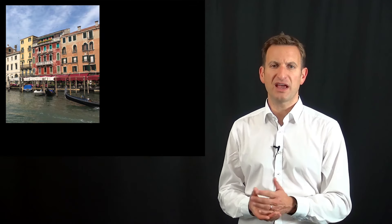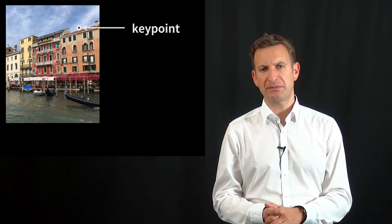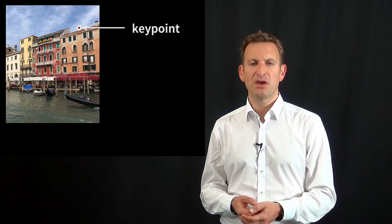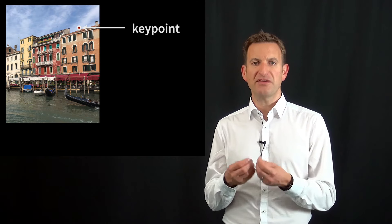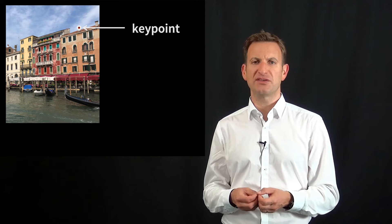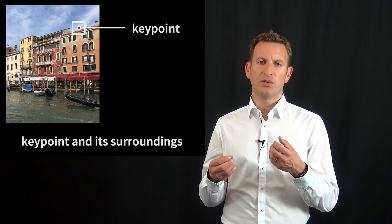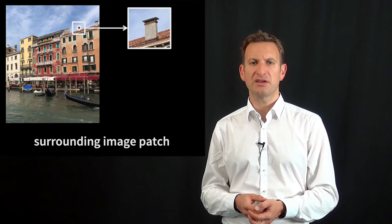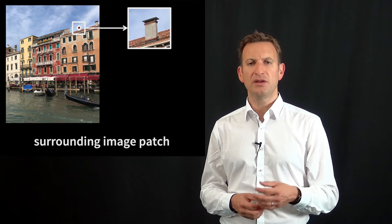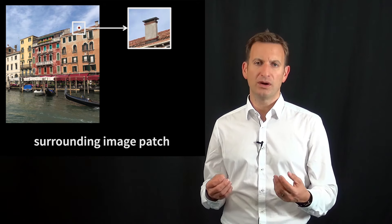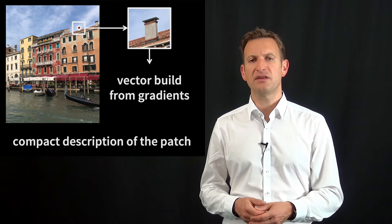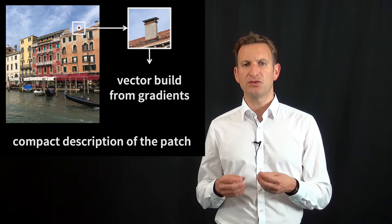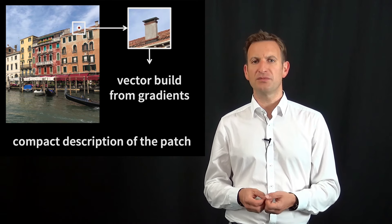I can illustrate this with a small example. Consider this image of Venice, where we have a locally distinct point sitting here on a chimney. We can describe that point by taking the local neighborhood — a local patch around that key point — and using the intensity values or the changes in intensity values, i.e., the gradients in this local area, to turn it into a descriptor vector.